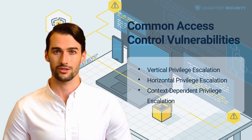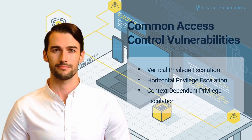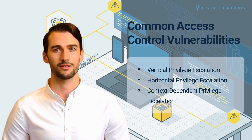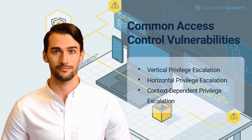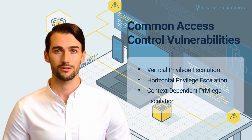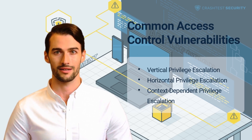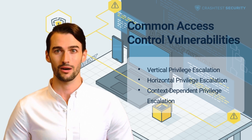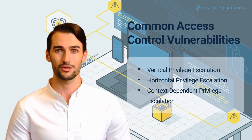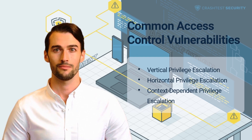Broken authentication vulnerabilities can be categorized as vertical, horizontal, and context-dependent privilege escalation. Vertical privilege escalation: vertical access controls are used to restrict access to crucial functions not available to other users in the organization. For example, broken vertical access controls can be exploited to access functions that ordinary users can't access, such as modifying and deleting user accounts. Examples of vertical privilege escalation attacks include unprotected sensitive functionality, parameter-based attacks, and broken access control due to platform misconfiguration.